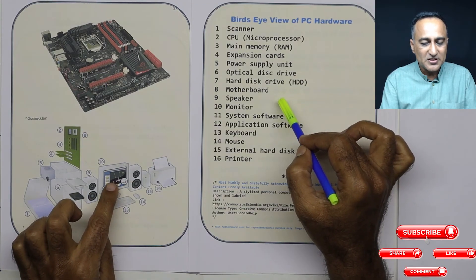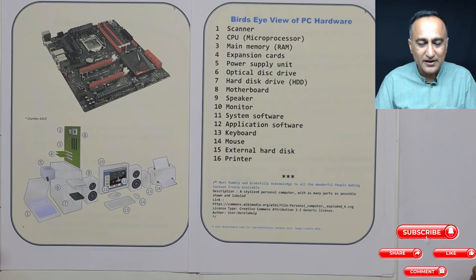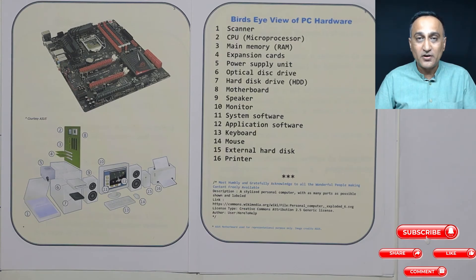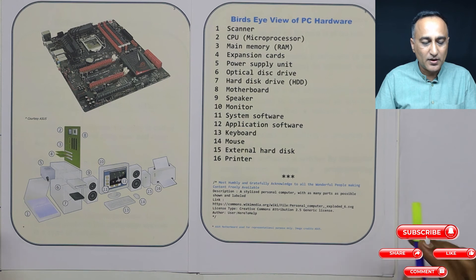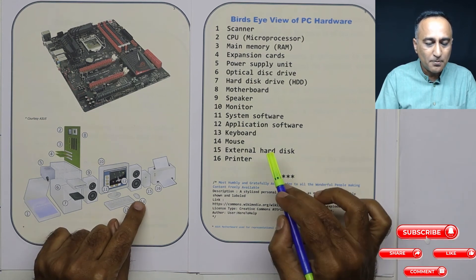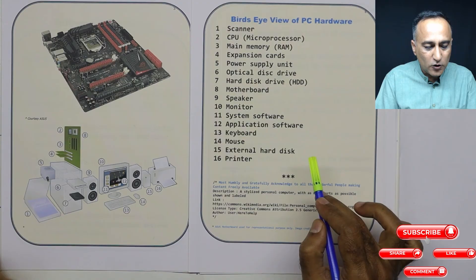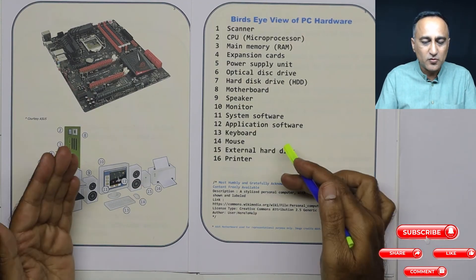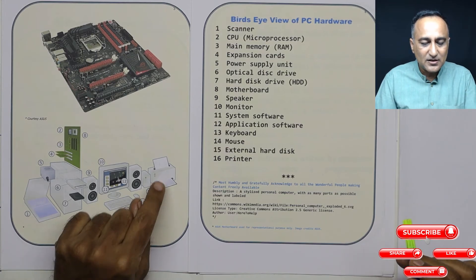Speakers, monitors, system software — an example of system software is Microsoft Windows. Example of application software: if you have written software to manage your library, that's an example of application software. Keyboard, then your mouse, then an external hard drive — if you need additional capacity, you can use an external hard drive. And last is the printer. These are just some of the common hardware components you need to be familiar with.